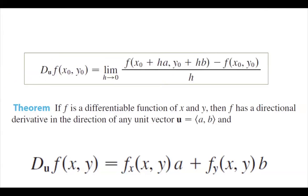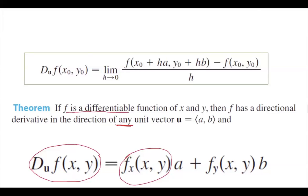We have the definition of the directional derivative, and we have a nice theorem. The theorem says: if f is a differentiable function, then f has a directional derivative in the direction of any unit vector u, and it equals the partial derivative of f with respect to x times a, plus the partial derivative of f with respect to y times b, where (a, b) are the coordinates of the unit vector u.